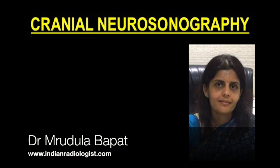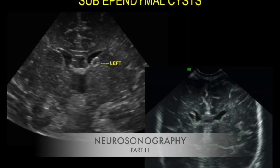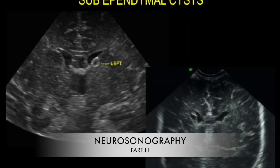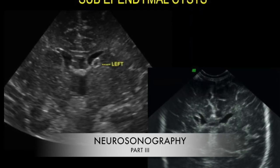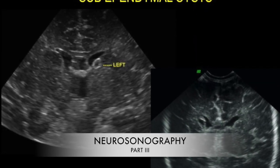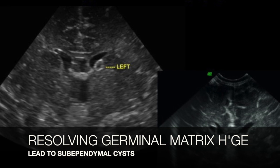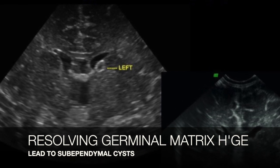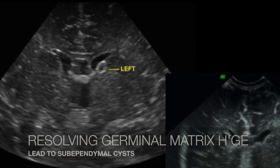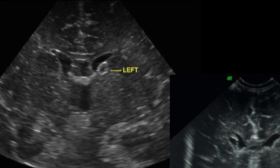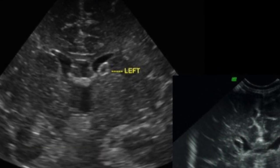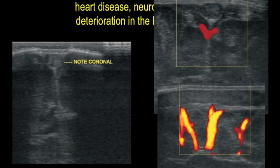Many times germinal matrix grade 1 hemorrhages resolve and they leave a tiny cystic area, which are sub-ependymal cysts. These are very commonly picked up on ultrasounds in the neonatal setting.